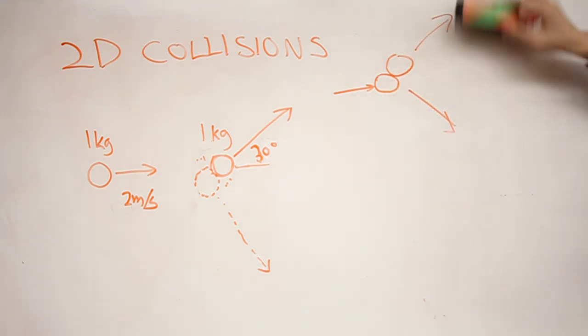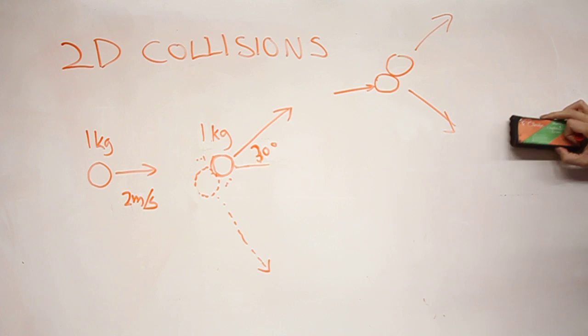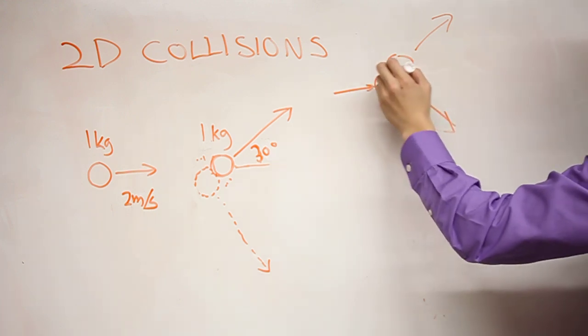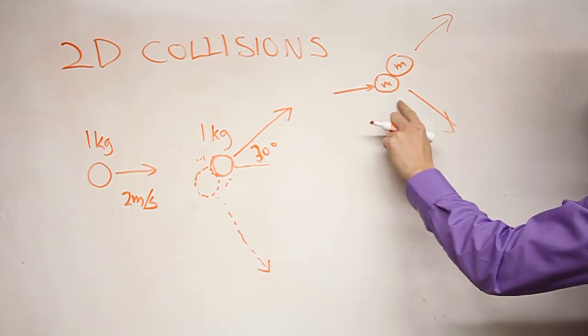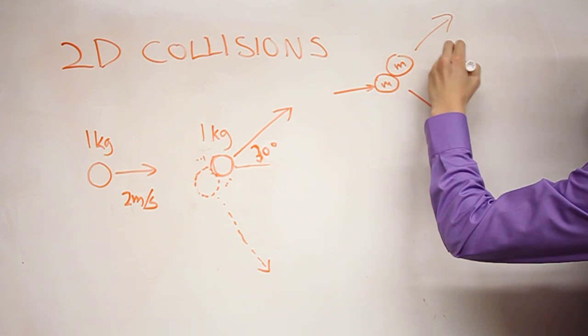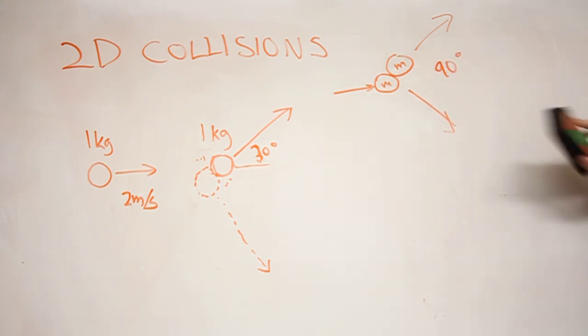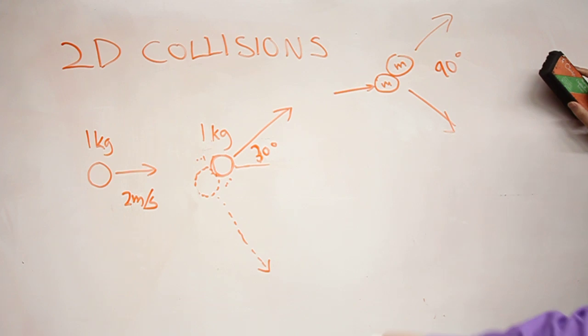You can logically picture that. If these are the same mass, if you can go through the equations of momentum and kinetic energy for elastic collision, this is actually always 90 degrees, just a result of the beauty of physics of those two equations.